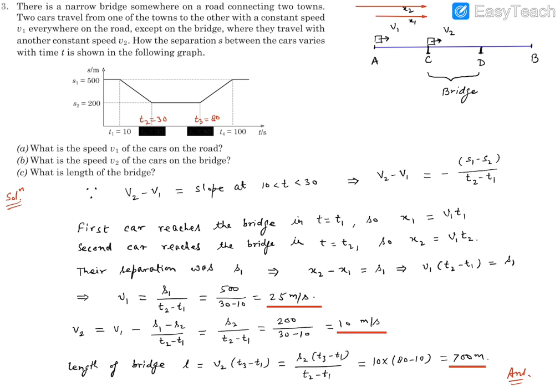So these are our final answers: V1 equals 25 m/s, V2 equals 10 m/s, and the length of the bridge is 700 meters. Thank you.